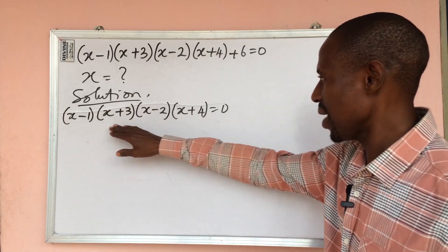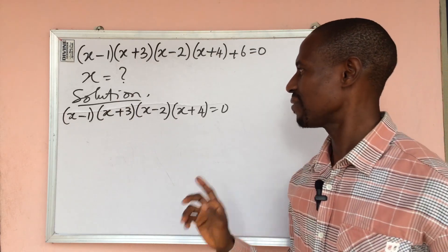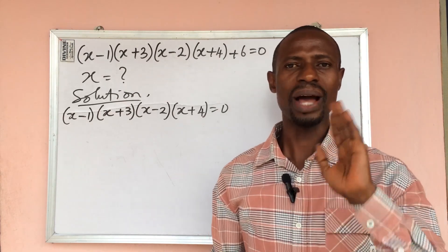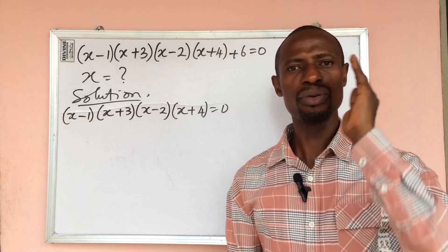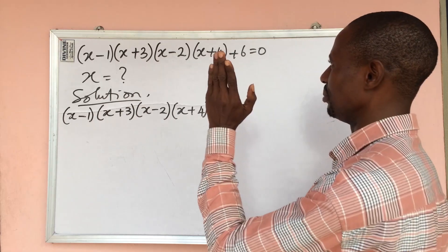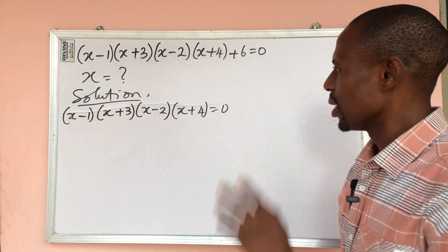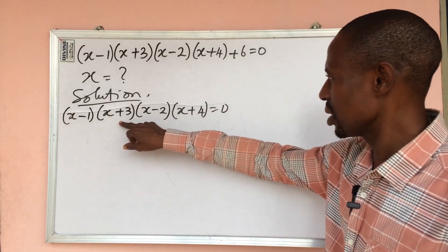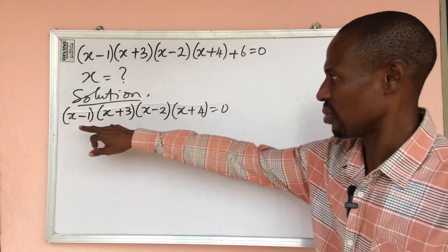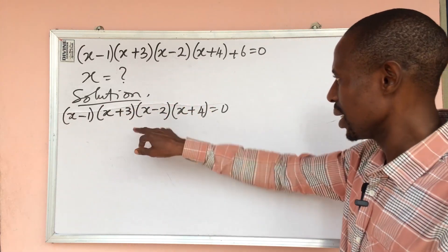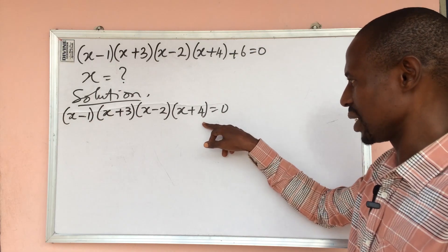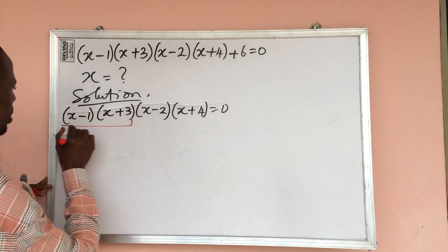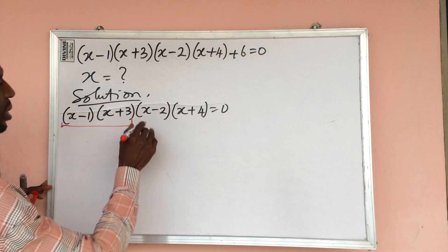If we open up everything here, we are going to have the highest power of x to be four. In other words, we are expected to get four roots to this equation. So how do we handle this? Let's use this approach — take the first two brackets and open them separately, then take the next two separately.